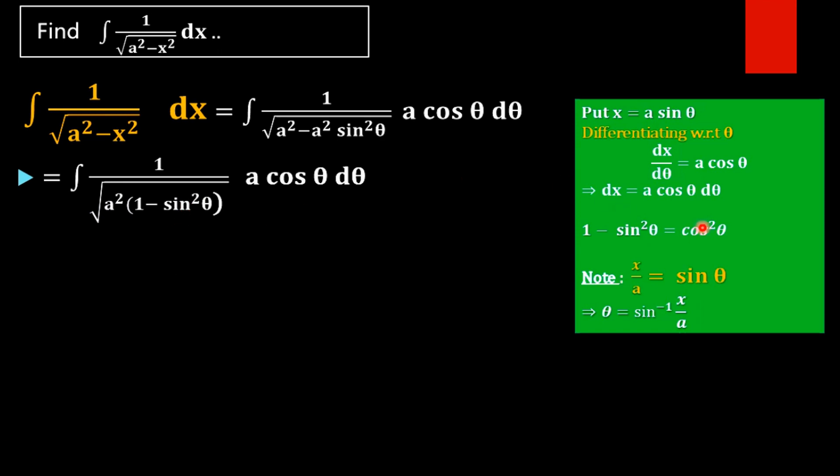What is 1 minus sin square theta? That is cos square theta. So why we are taking x equal to a sin theta? It's because on taking that quantity, we can take a cos theta outside of this square root. That's why we are taking x equal to a sin theta here.